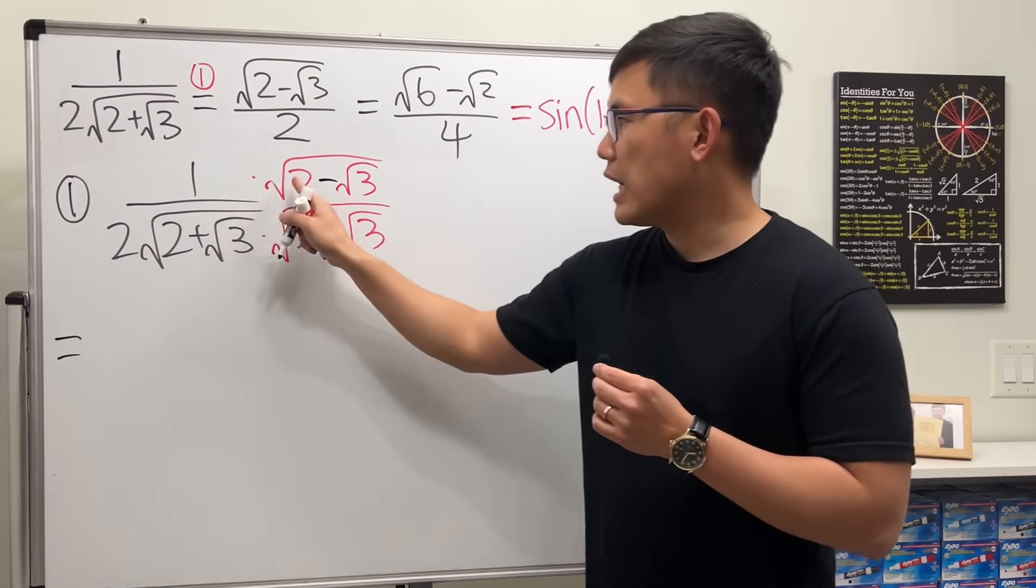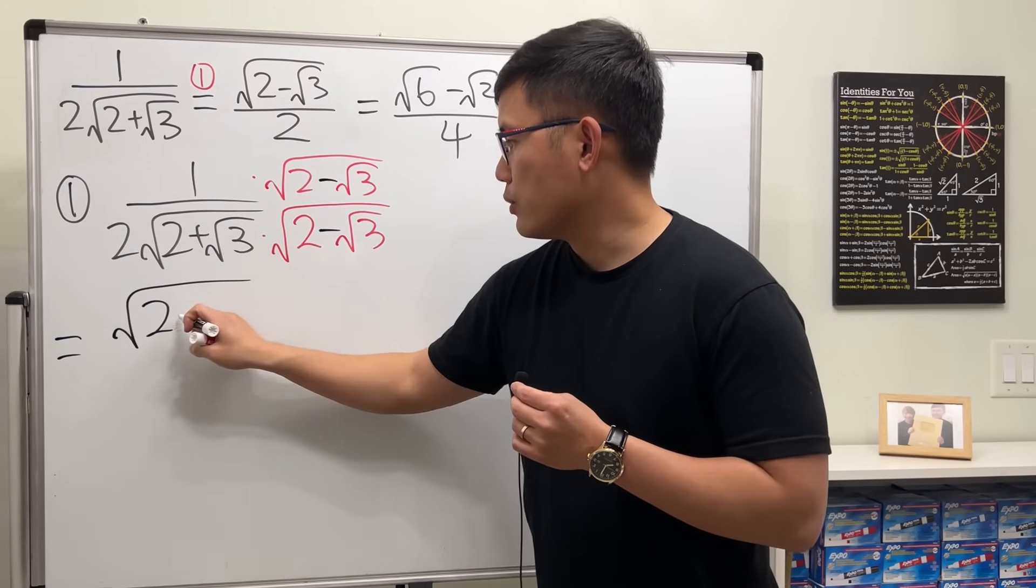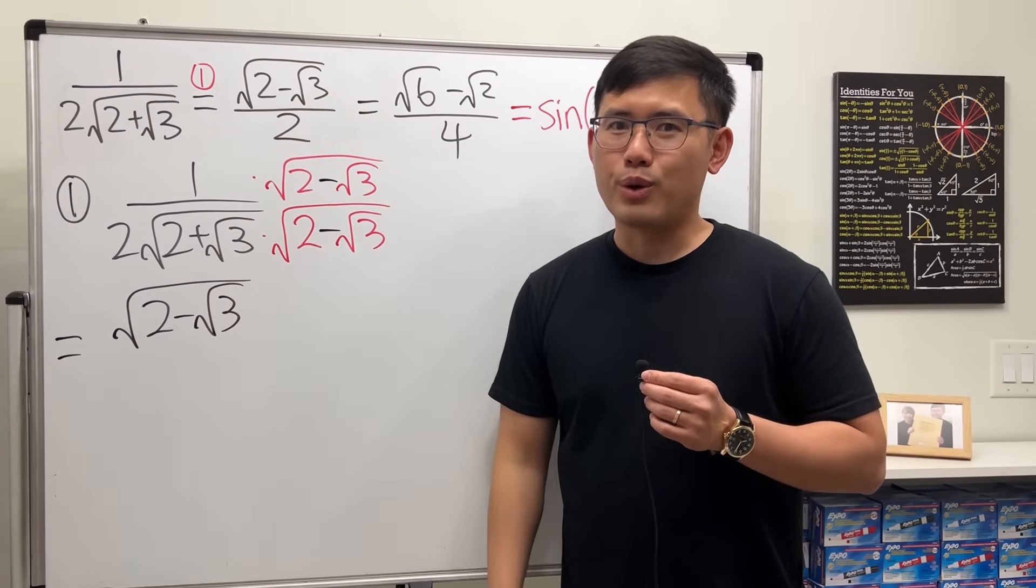And as we can see, on the top, 1 times that is just that. So square root of 2 minus square root of 3. That's what we have. So this looks promising.